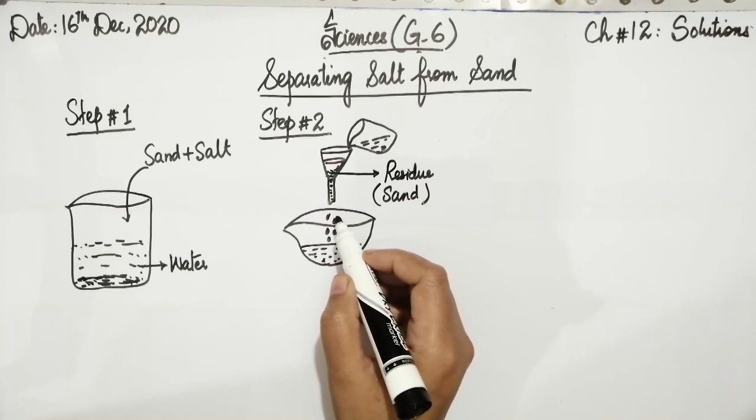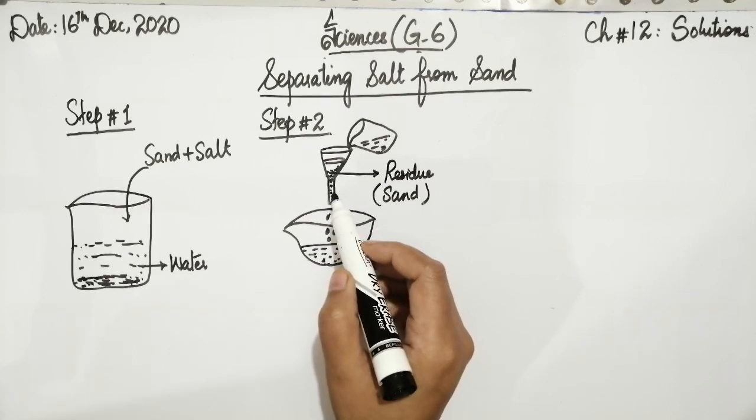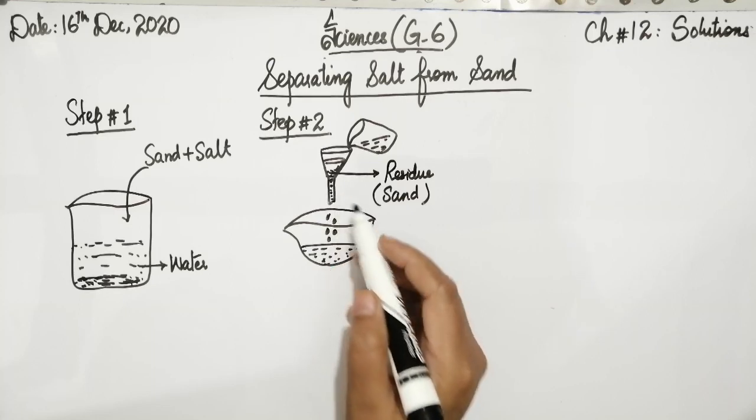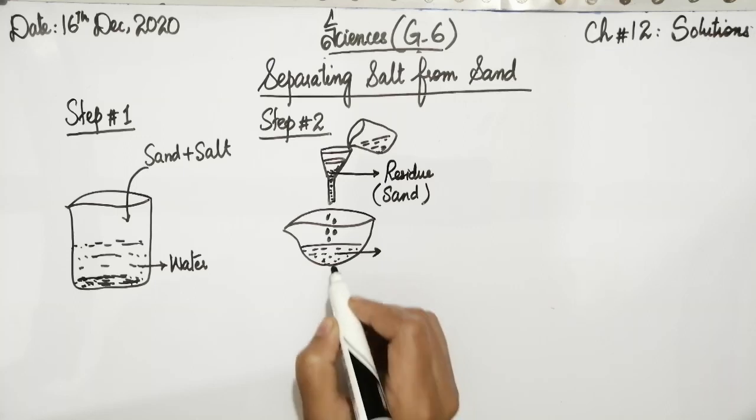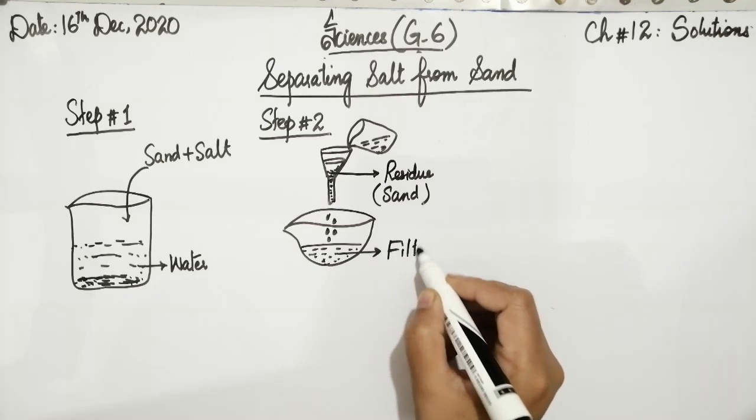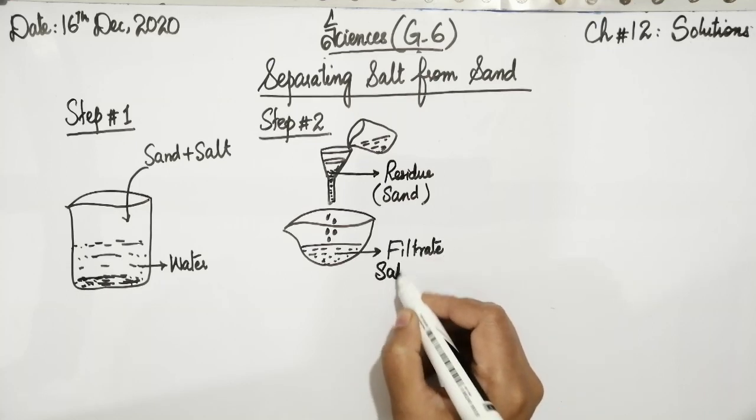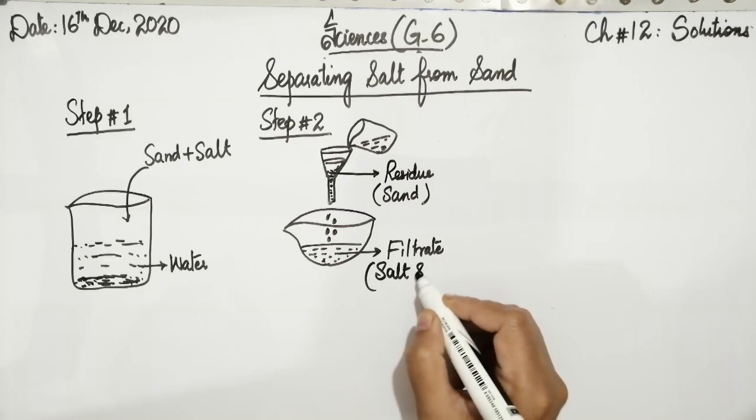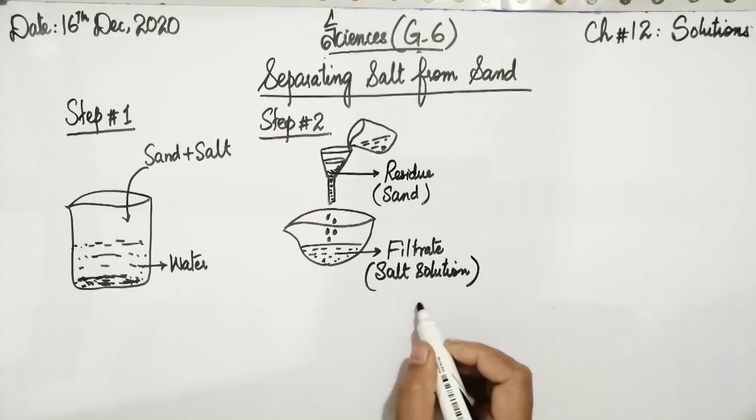The substance in liquid form passing through the filter paper or holes of the filter paper is actually collecting in the dish in the form of filtrate. This filtrate is the clear solution of salt, that is the salt solution. Salt solution means salt plus water.